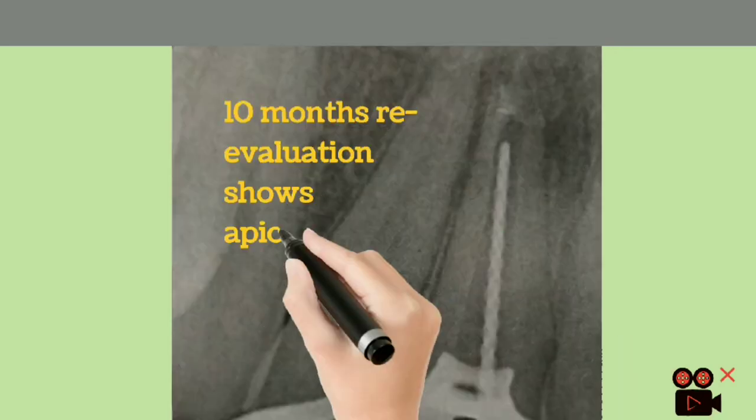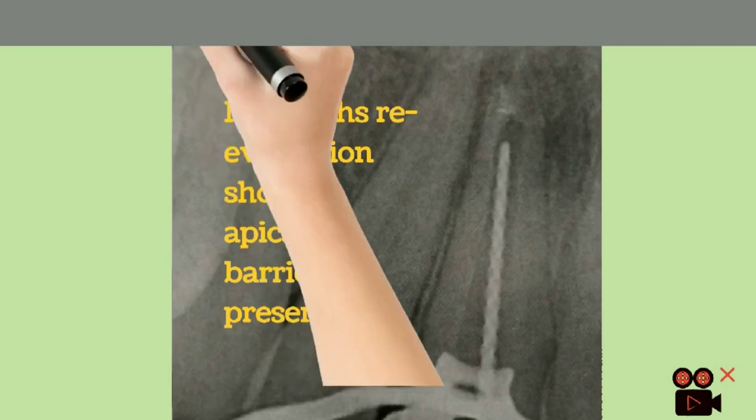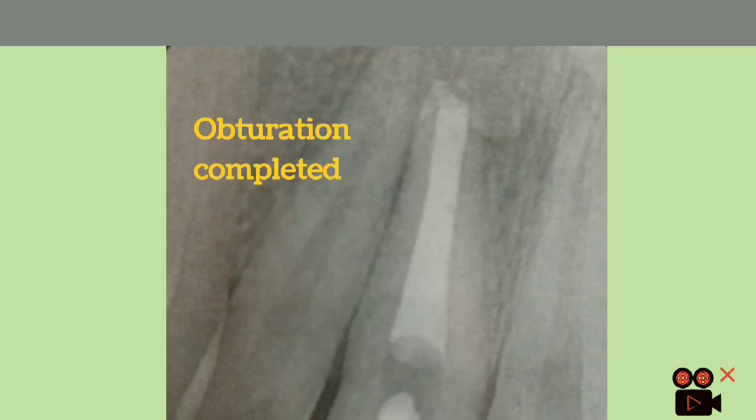And then again the patient is called after 10 months for evaluation of apical barrier. Here you can see there is apical barrier formation. So now the canal is obturated with gutta-percha.